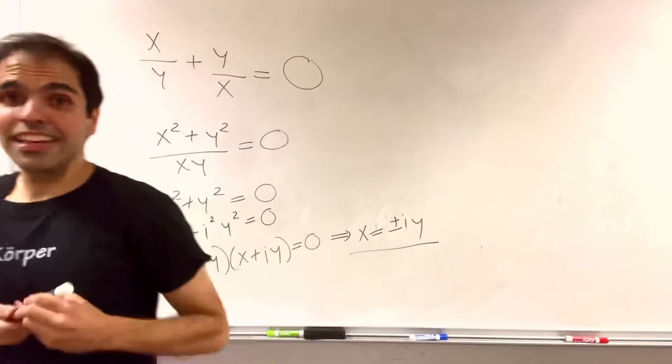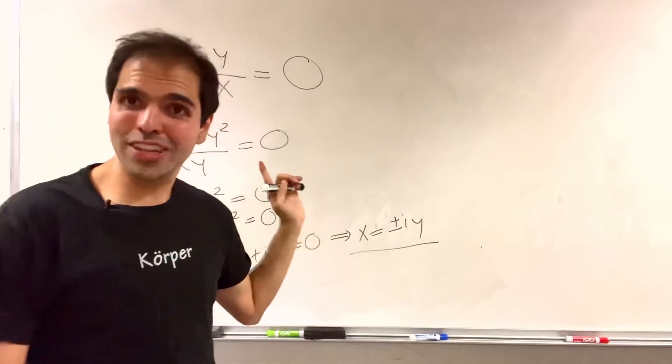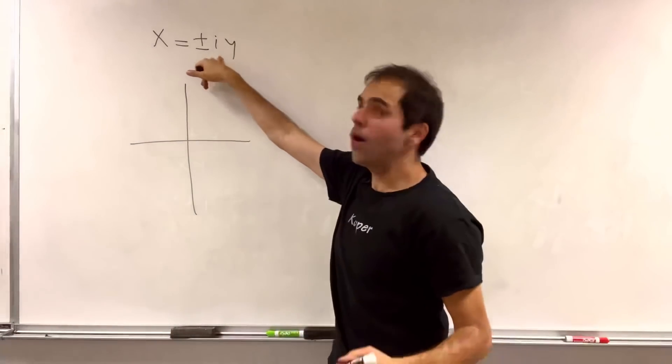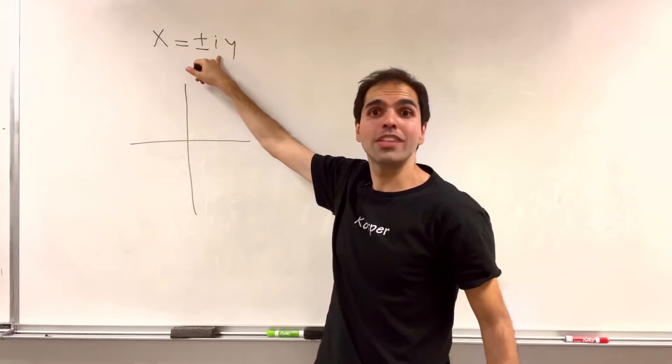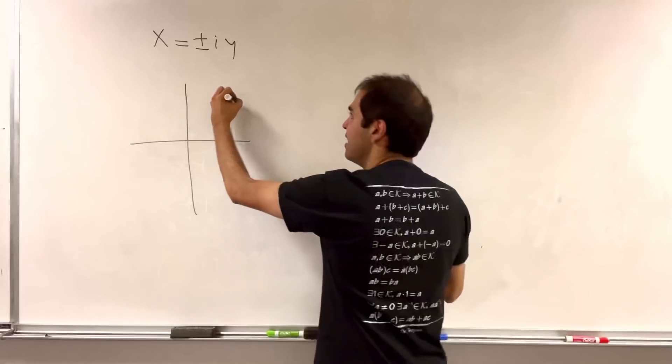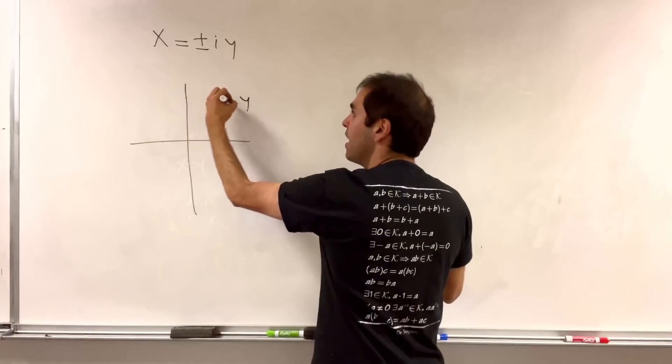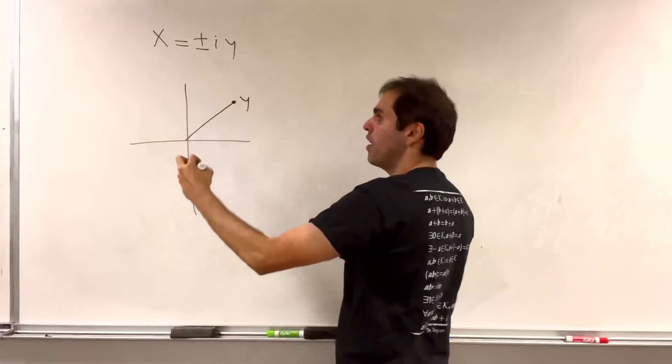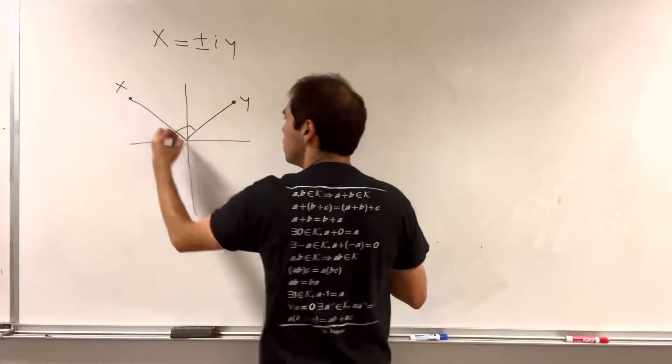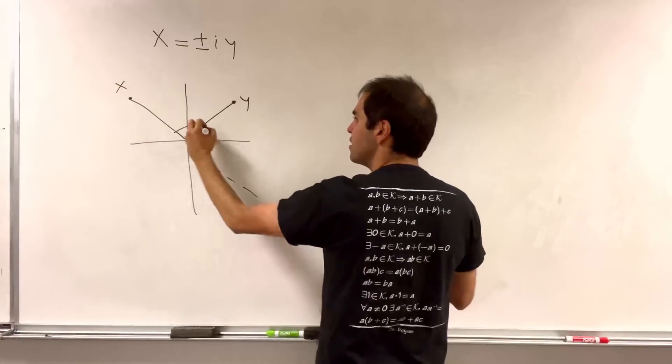And in this case, it's really cool, because we have another neat geometric interpretation. Because what is i, it's just rotation by pi over 2. And therefore, again, given a point y, you can get the corresponding point x just by rotating it either by 90 degrees or by minus 90 degrees.